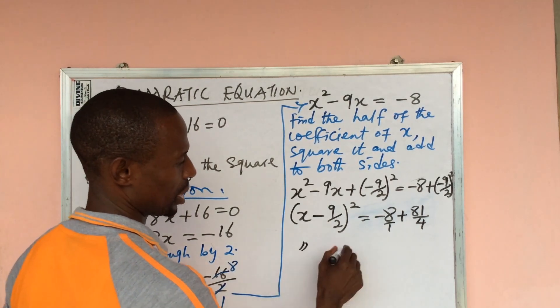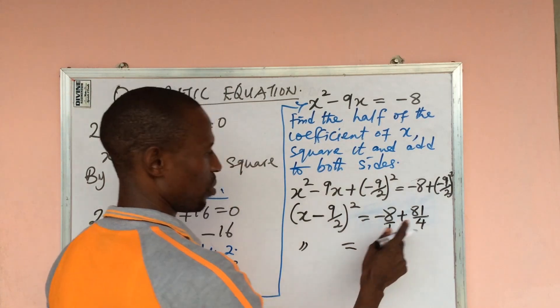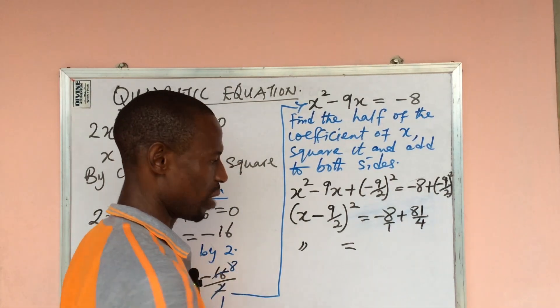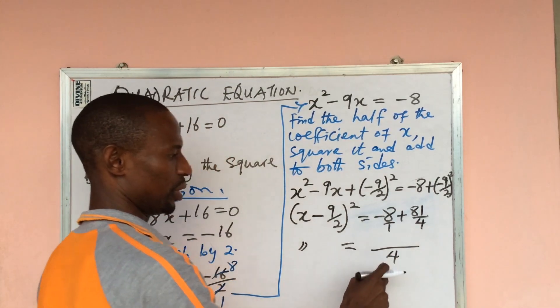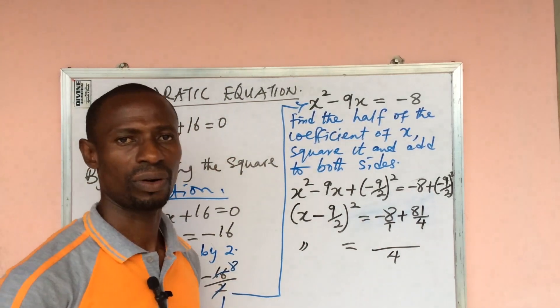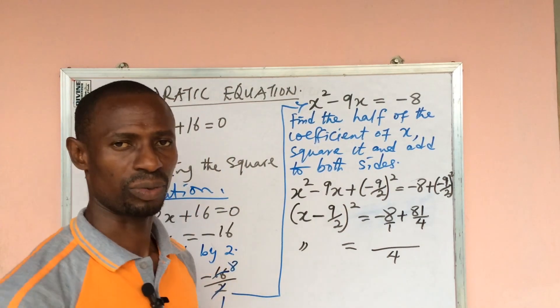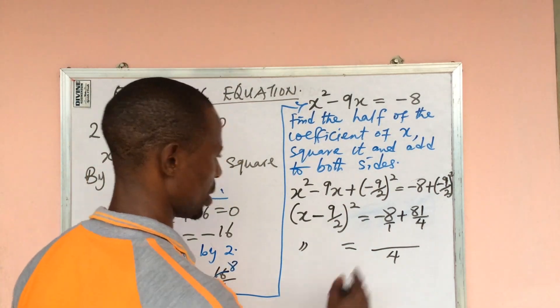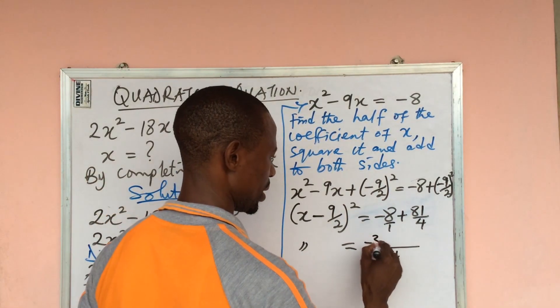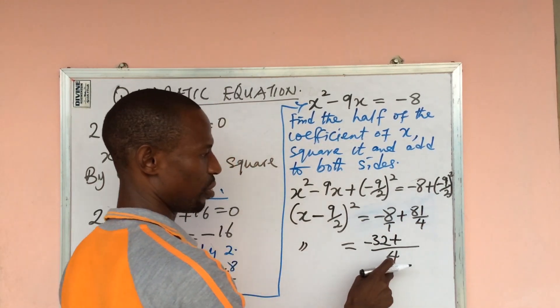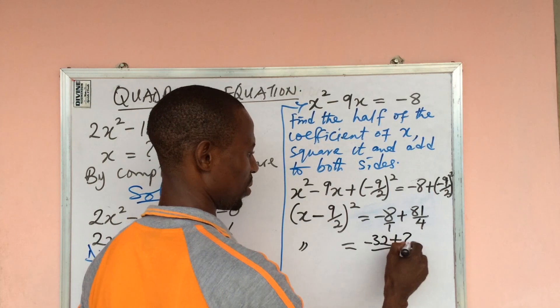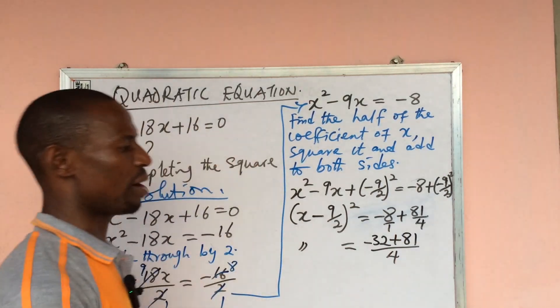So let's keep this here. We find the LCM of 4 and 1, and that will give us 4. So 4 times 8 will give us -32.